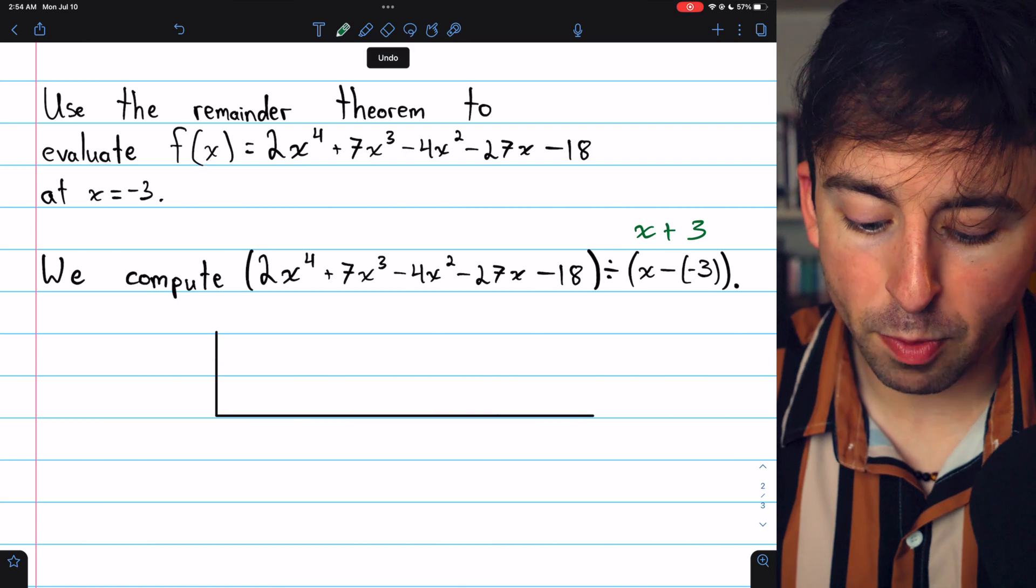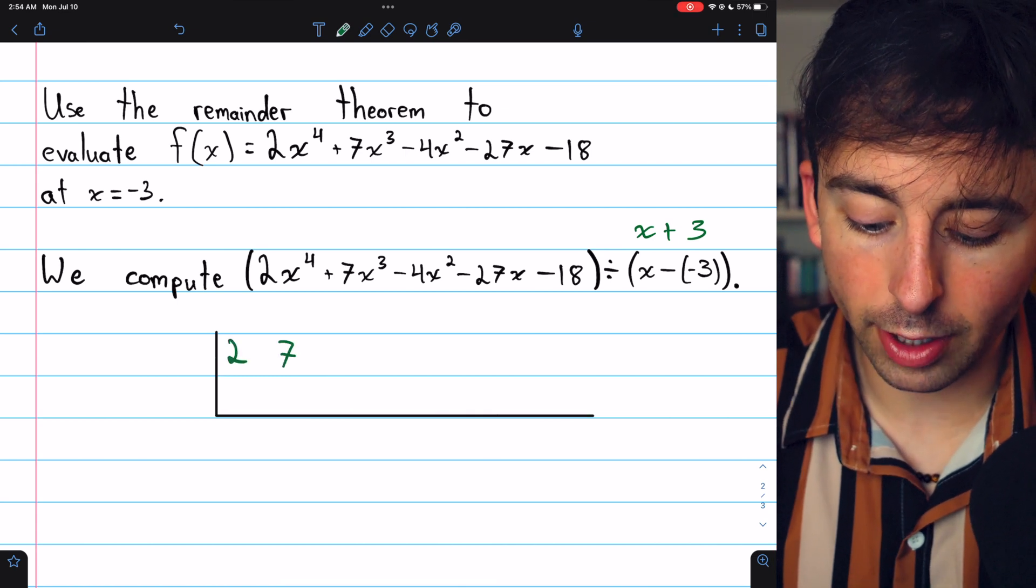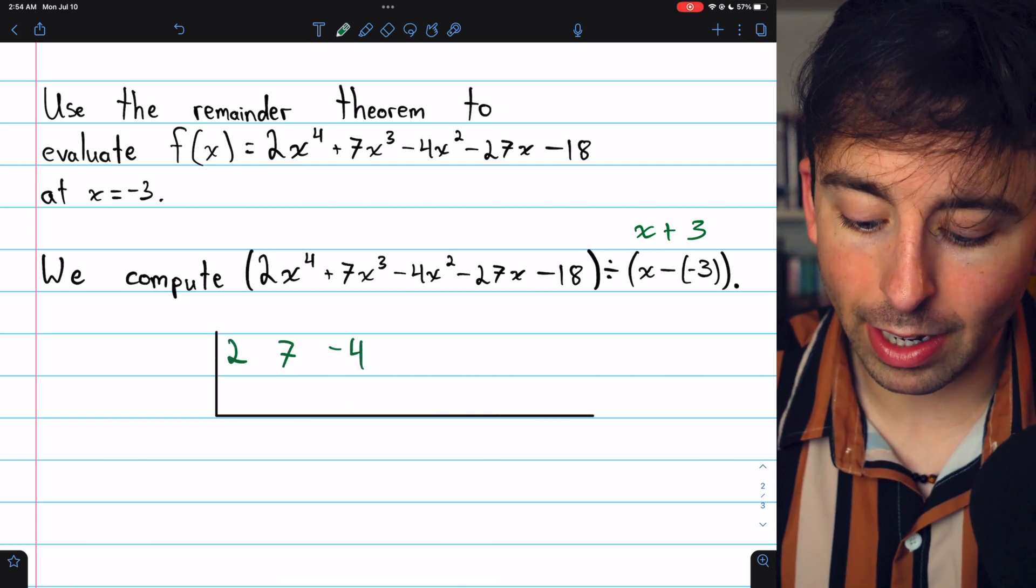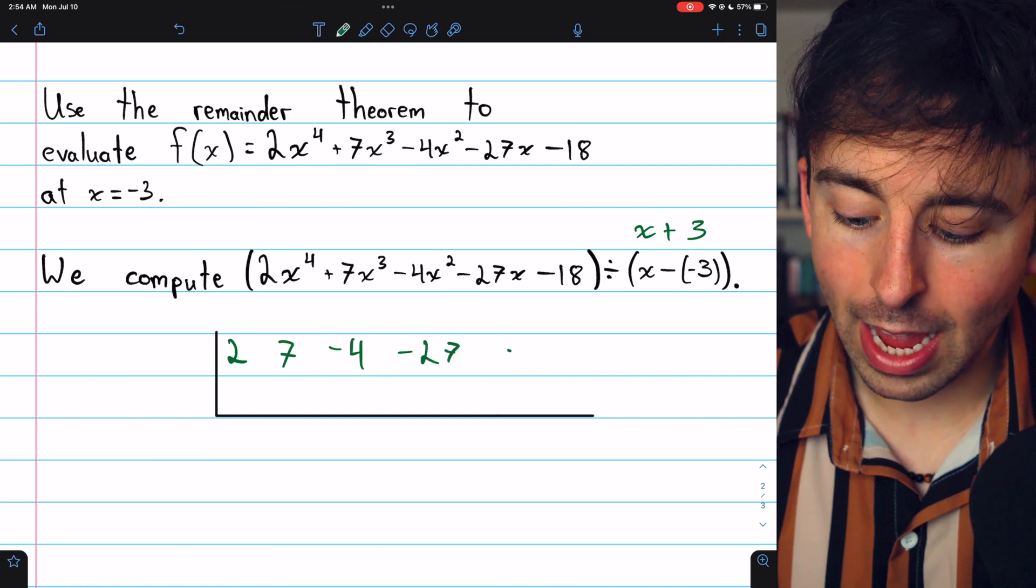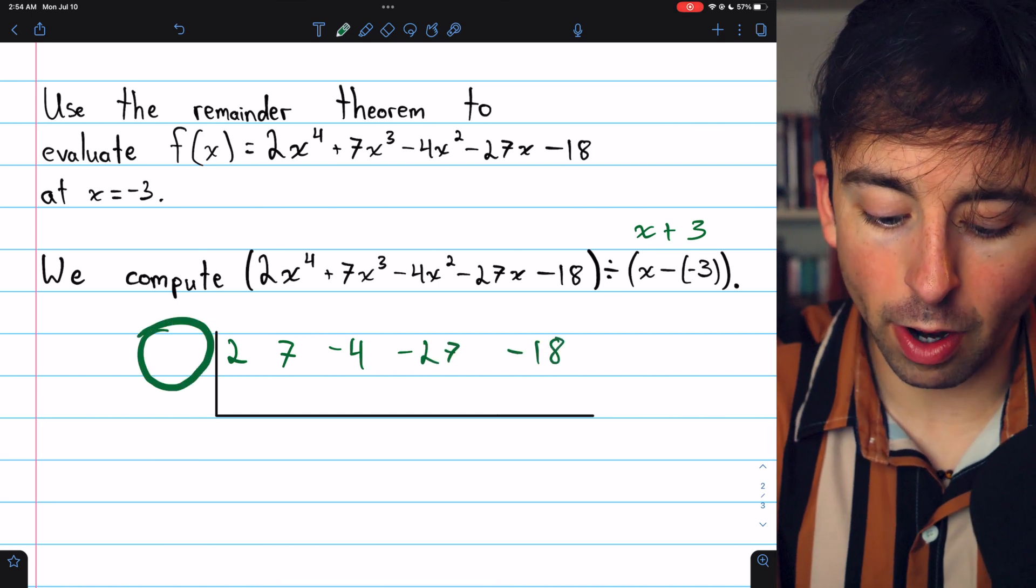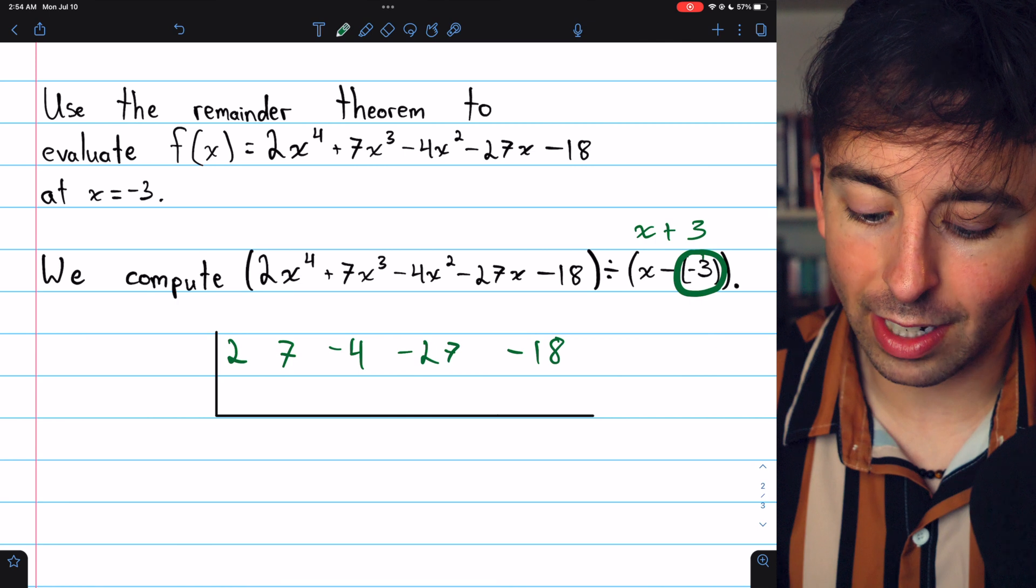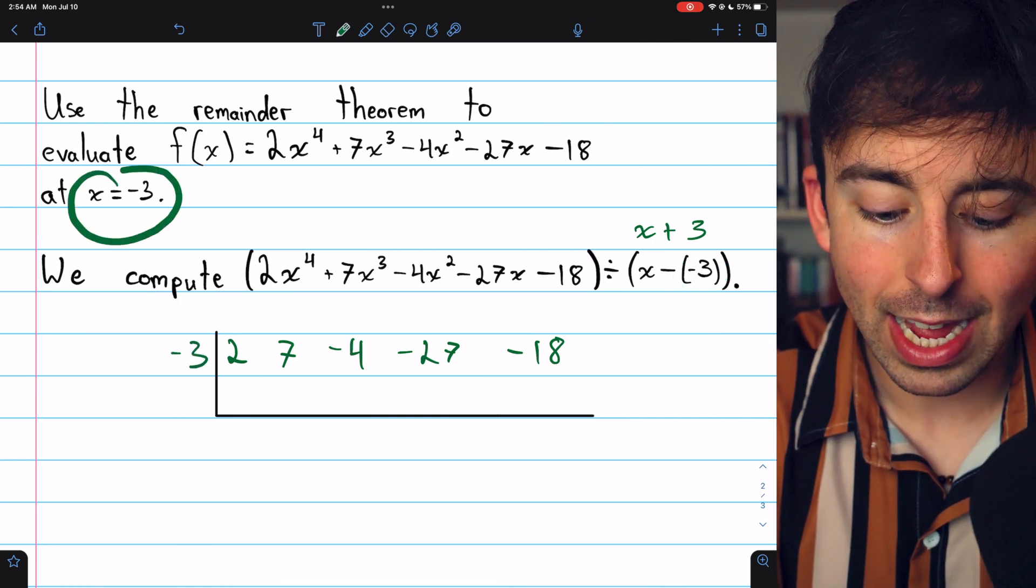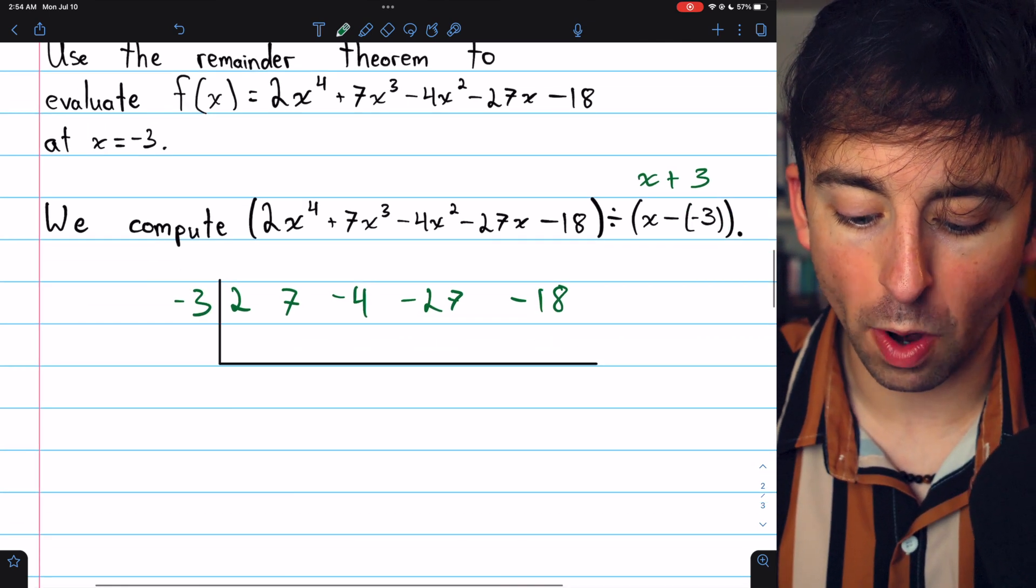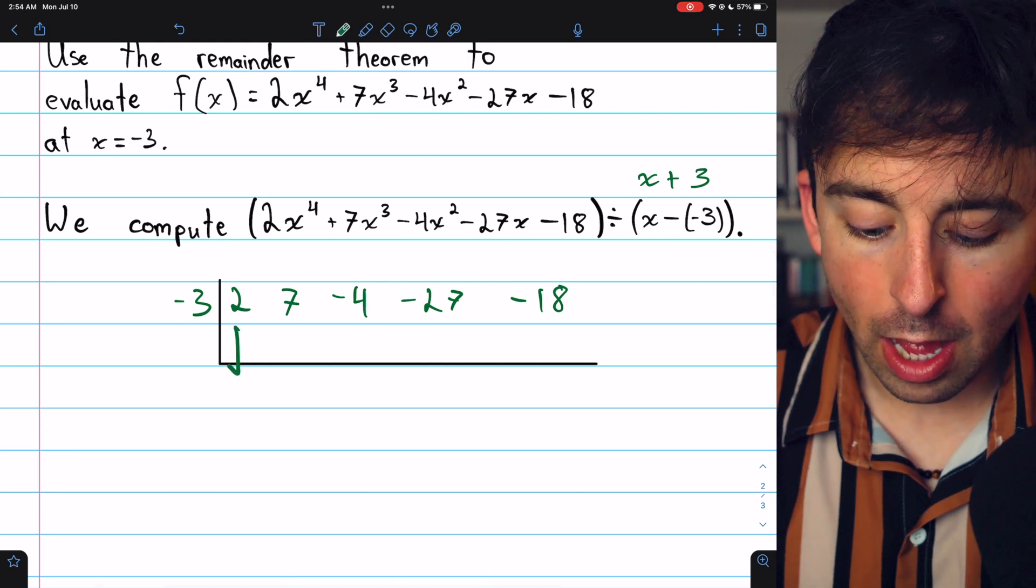So here's our setup. In the top row, we'll put the coefficients of the polynomial: 2, 7, minus 4, minus 27, and minus 18. Out front, we put the value we're subtracting from x, which in this case is negative 3. That's the x value at which we're trying to evaluate the function.